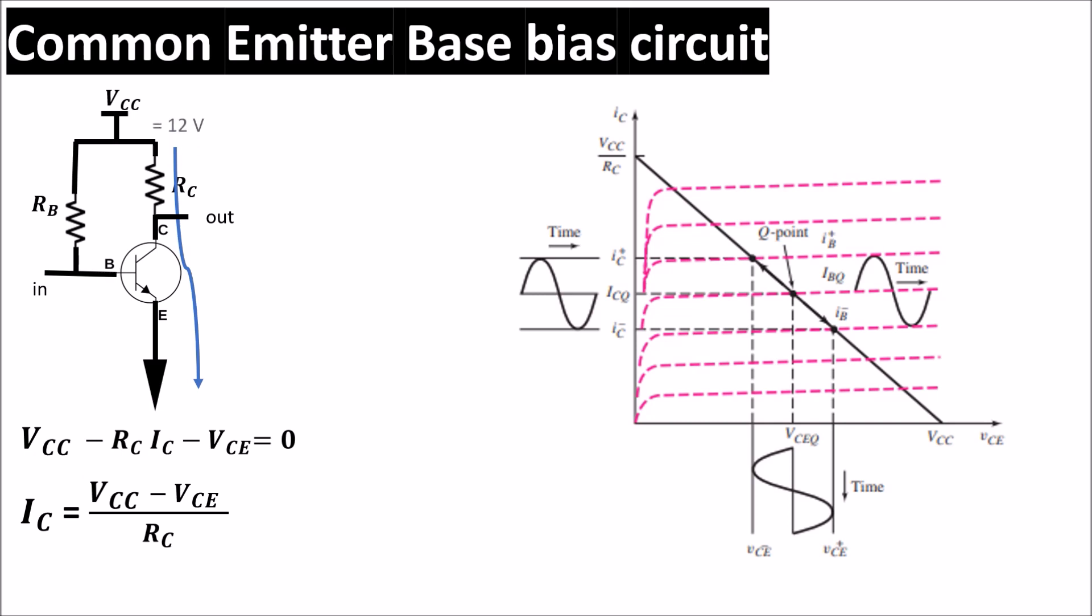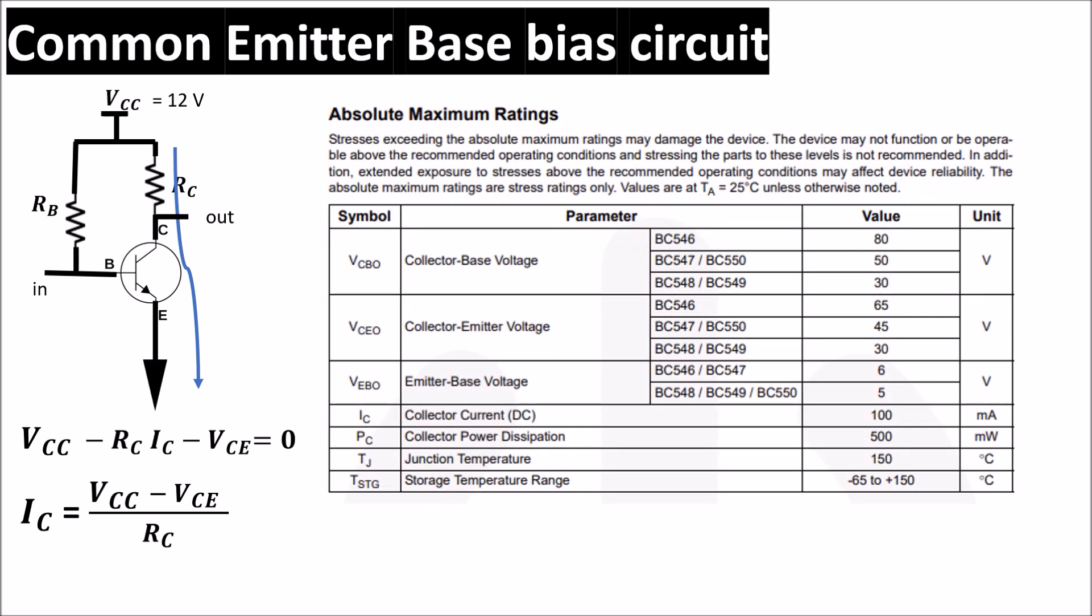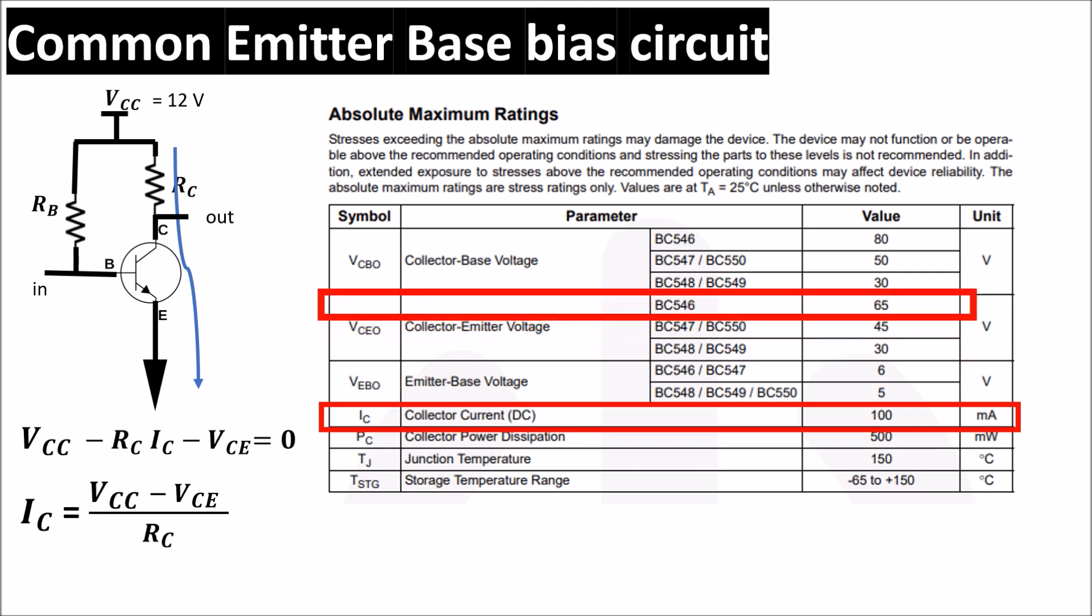So let's see a real case. We imagine to have 12 volts as power supply and we use for example the Fairchild BC546 as NPN BJT transistor. So for biasing this BJT, the first thing to do is look into the datasheet where we can find all the characteristics of the device. First we see some maximum ratings from which we should keep away. For example, we see a maximum collector current of 100 milliamps and a VCE of 65 volts. But we have a power supply of 12 volts so we are okay.